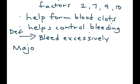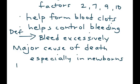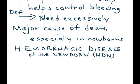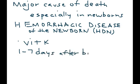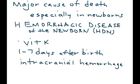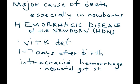Excessive bleeding is a major cause of death, especially in newborns, due to a medical condition known as hemorrhagic disease of the newborn. In this condition, a baby is born with vitamin K deficiency, and approximately one to seven days after birth, the patient develops severe bleeding manifesting as an intracranial hemorrhage. There are many reasons why a newborn can be deficient in vitamin K. One reason is that the neonatal gut, responsible for producing vitamin K, is usually sterile in the first few days of life, so the gut is not producing vitamin K.